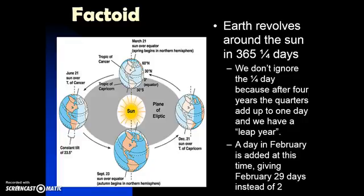Just so you know, the Earth revolves around the Sun in 365 and a quarter days. We don't ignore that quarter day because eventually four of those is going to give us a full day. So that is when we have a leap year. In February, every four years we have February 29th, giving us an extra day so that we make up for that quarter day that we're not counting the other three years.